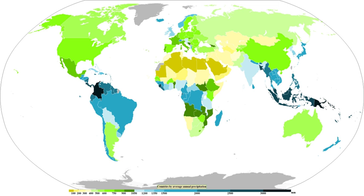Like other precipitation, hail forms in storm clouds when supercooled water droplets freeze on contact with condensation nuclei, such as dust or dirt. The storm's updraft blows the hailstones to the upper part of the cloud. The updraft dissipates and the hailstones fall down, back into the updraft, and are lifted again. Hail has a diameter of 5 mm or more.